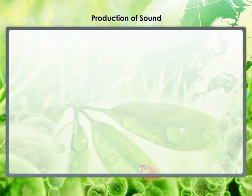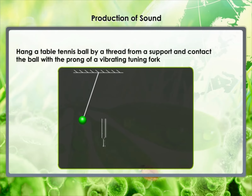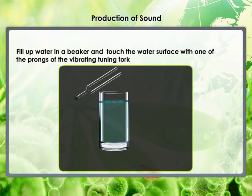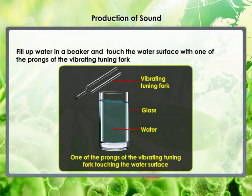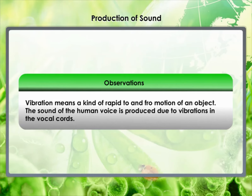Production of Sound. Let's conduct small activities and make some observations. Take a tuning fork and set it vibrating by striking its prong on a rubber pad — bring it near your ear. Touch a suspended table tennis ball gently with the prong of a vibrating tuning fork. Fill a beaker with water to the brim and touch the water surface with a vibrating tuning fork, then dip the prongs into the water. We produce sound by striking the tuning fork. We can also produce sound by plucking, scratching, rubbing, blowing or shaking different objects — we set the objects vibrating and produce sound.